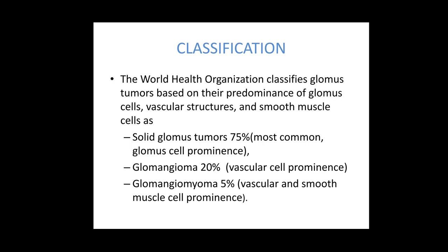There are three variants. The most common is the solid glomus tumour, accounting for 75%, which has a prominence of glomus cells. The second variant is glomangioma, accounting for 20%, where the vascular spaces are more prominent. The third variety is glomangiomyoma, accounting for the remaining 5%, where both the vascular as well as the smooth muscle cells are prominent.